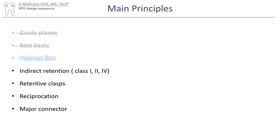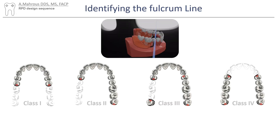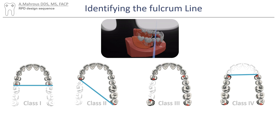The next step is the identification of the fulcrum line. The fulcrum line is an imaginary line that goes through the distal most rests on class two and one RPDs, and on the anterior most rests on class four, about which the RPD may rotate. It's important to note that there are no fulcrum lines on class three RPDs.